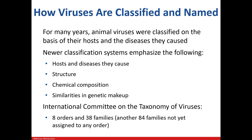For a while, viruses were classified based on what type of host they infected and what types of diseases they caused. Now, the classification systems focus on the host and diseases associated with them, along with what they look like, what they're made of, and similarities between them. As of now, there are eight orders and 38 families, which can change in an instant.